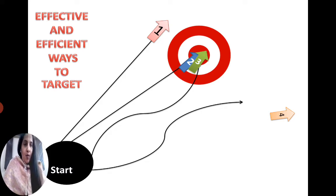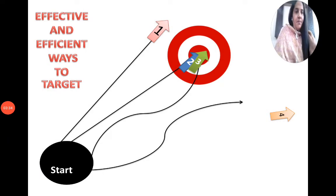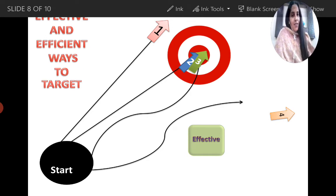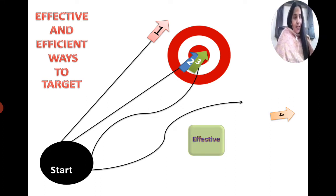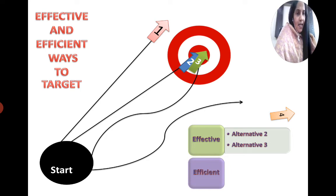So the question here is: which option is effective and which is efficient? We have to judge on the criteria of effective and efficient. Alternatives two and three are hitting the target. In the definition of effectiveness, if we are achieving our target then we are effective. So alternatives two and three are termed as effective — they are hitting the target and achieving the desired outcomes.